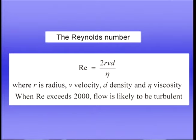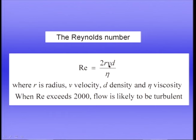Whether flow is turbulent or laminar depends on the Reynolds number, which has radius, velocity, and density in the numerator, and viscosity in the denominator. In long, smooth tubes of uniform diameter, flow is likely to be turbulent if the Reynolds number exceeds about 2,000. The Reynolds number reflects the inertial component — velocity times density — divided by the viscous component. A high-density gas favors turbulence; a very viscous gas favors laminar flow.